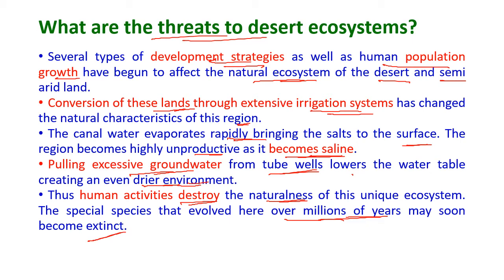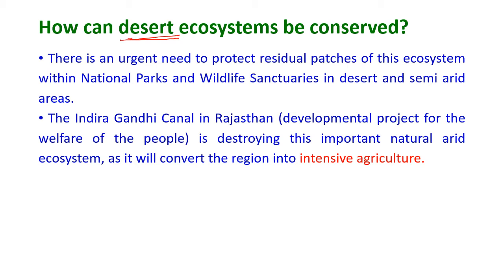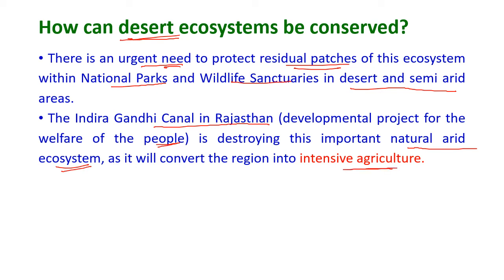There is an urgent need to protect the residual patches of this ecosystem within national parks and wildlife sanctuaries in desert and semi-arid areas. For example, the Indira Gandhi Canal in Rajasthan — a developmental project for the welfare of people — is now destroying this important natural arid ecosystem by converting the region into an intensive agricultural area. While agriculture is necessary for human beings, it destroys rare ecosystems such as the desert.